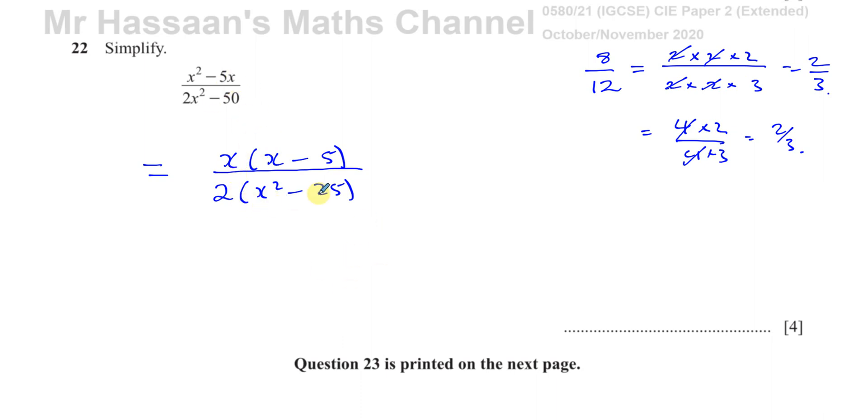what you should notice here is you have what's called a difference of squares. x squared and also 25 are both square terms and you have a minus sign between them. So this denominator is going to give you 2 times, you have x plus 5 and x minus 5.